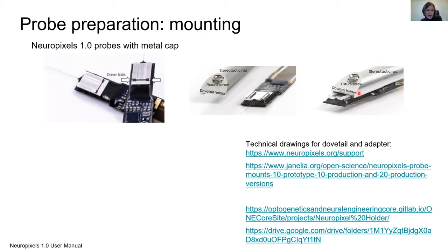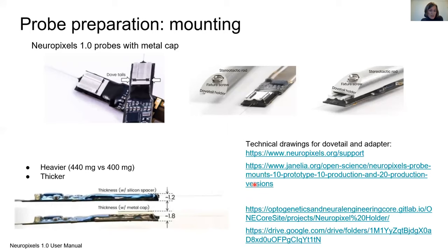If you don't want to buy it, you can also make it yourself. There are several resources of technical drawings and also 3D models of those caps and the holders that you could just print or get manufactured by a workshop. One thing you should keep in mind is that these dovetails come with a price. They make the probe heavier, 414 milligrams versus 400 milligrams, and they make the probe somewhat bigger. If this is an important issue for you, you may want to reconsider and come up with a different solution.